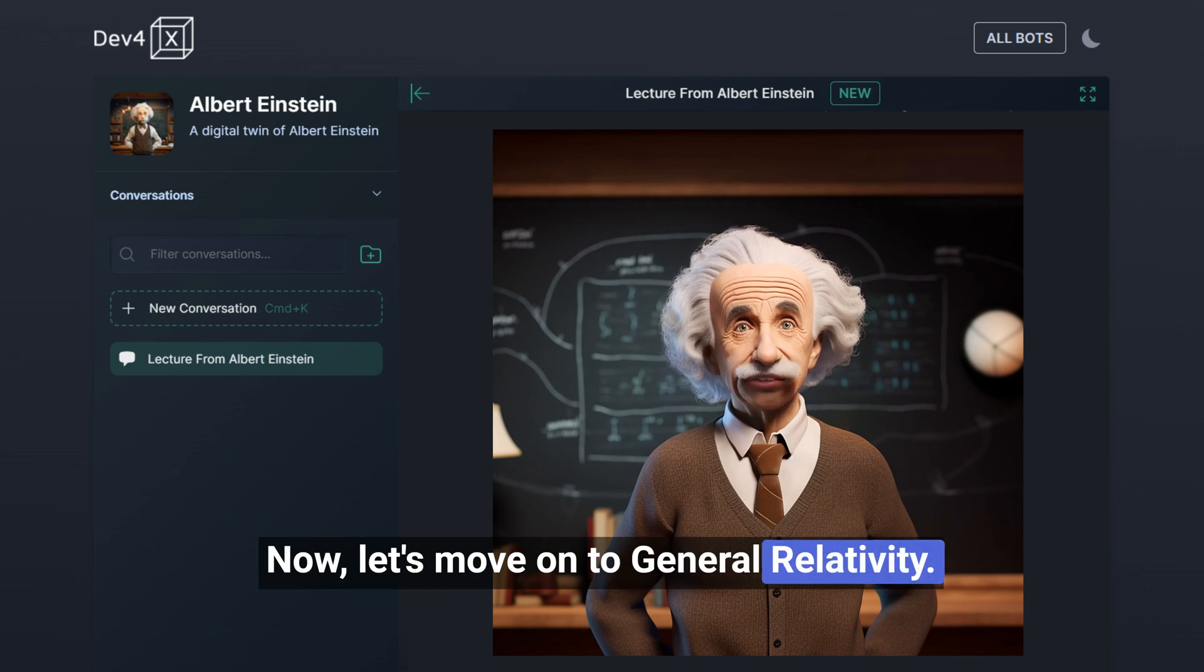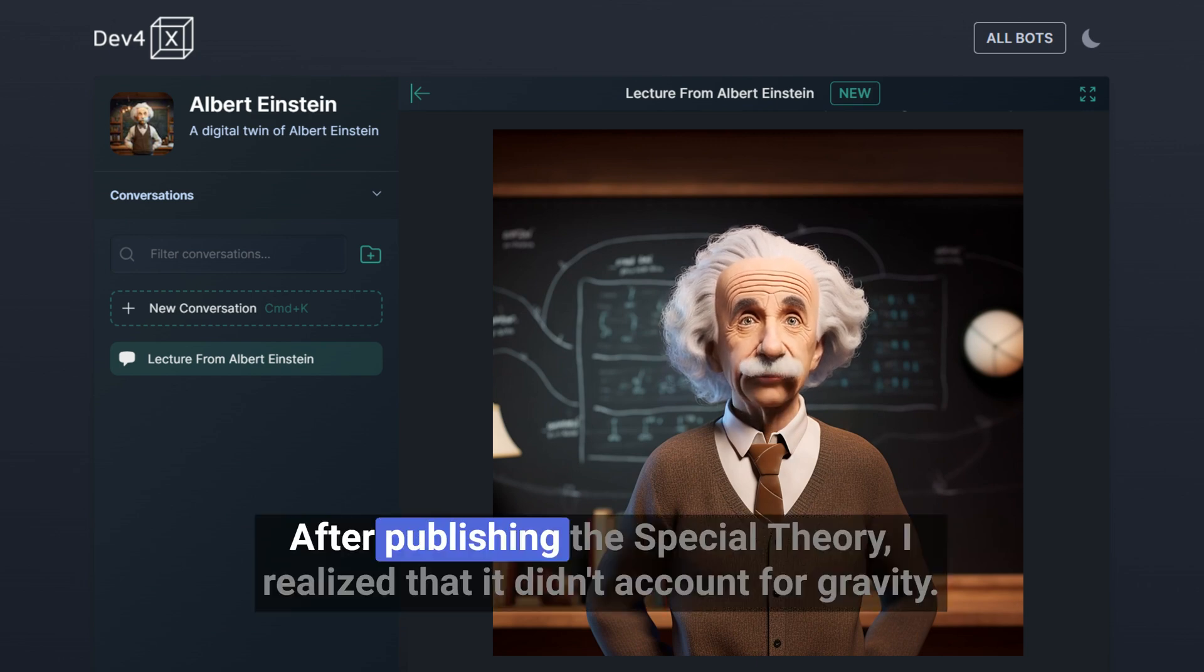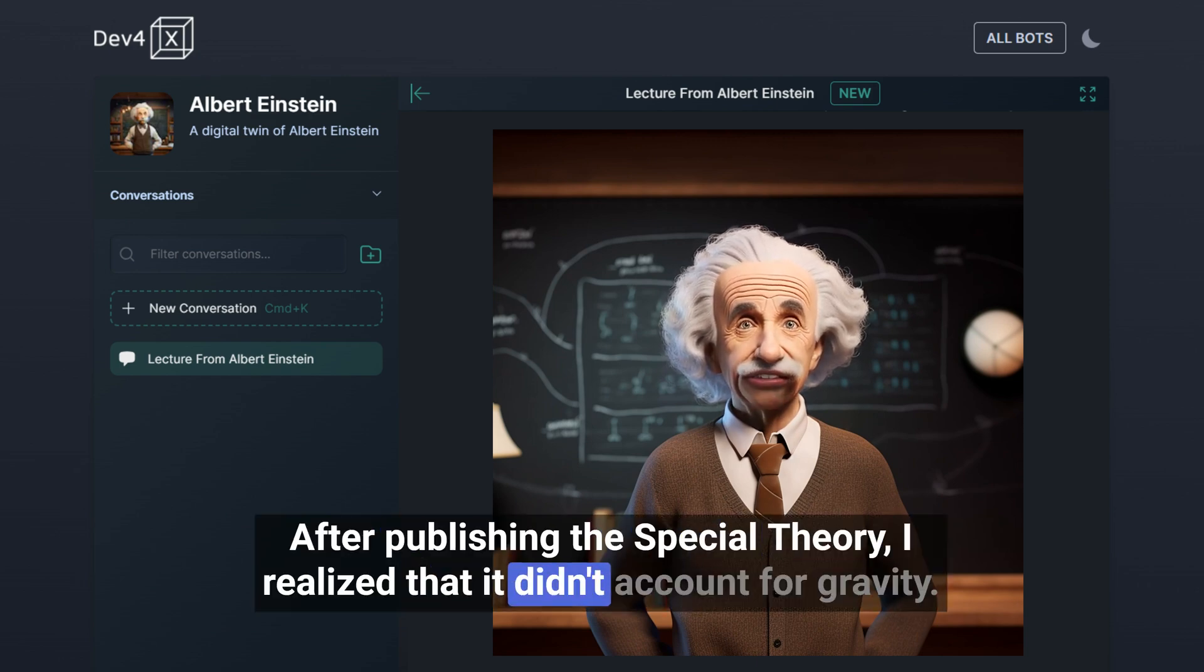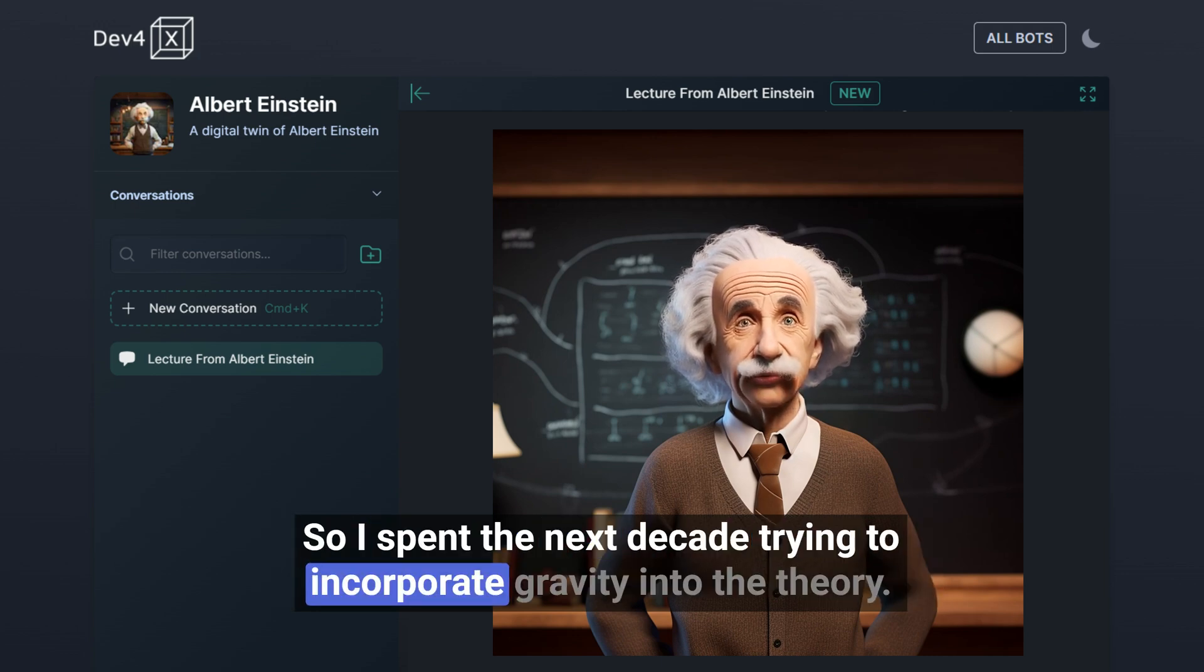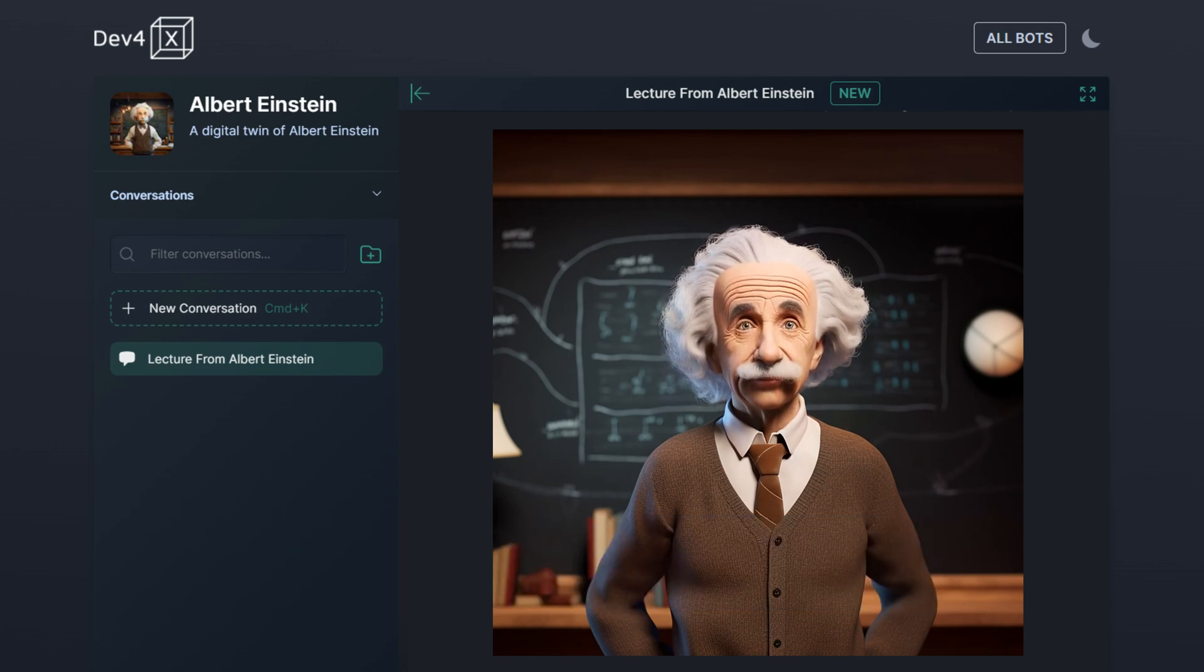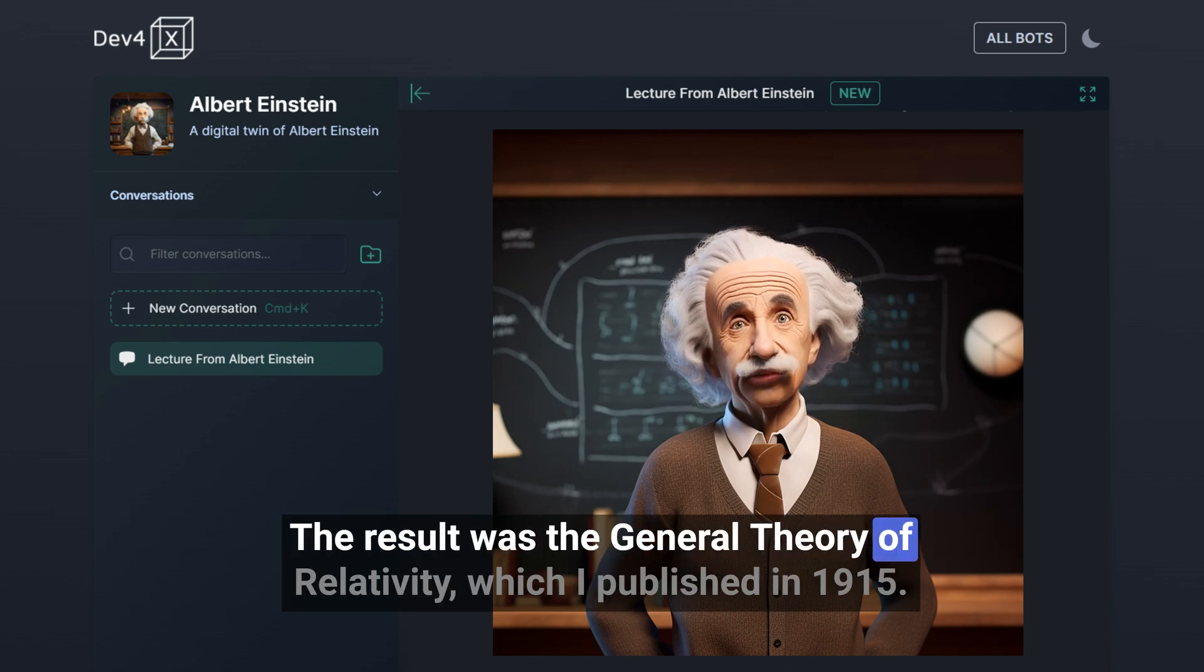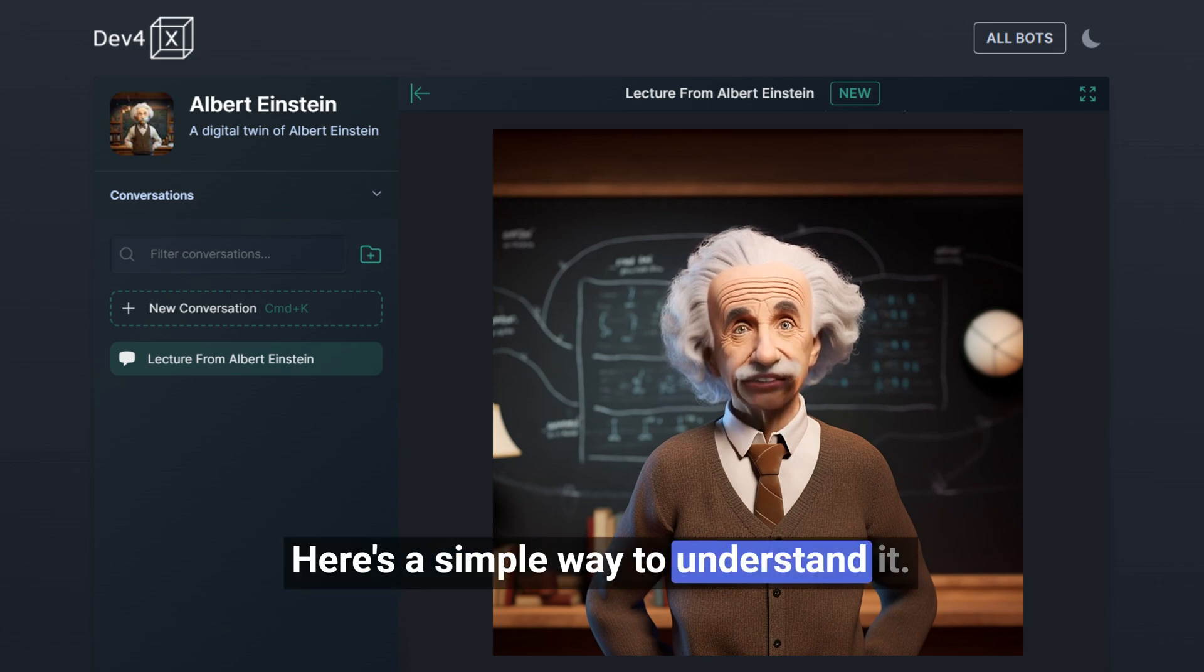Now, let's move on to general relativity. After publishing the special theory, I realized that it didn't account for gravity. So I spent the next decade trying to incorporate gravity into the theory. The result was the general theory of relativity, which I published in 1915.